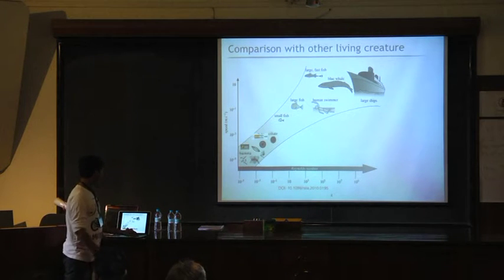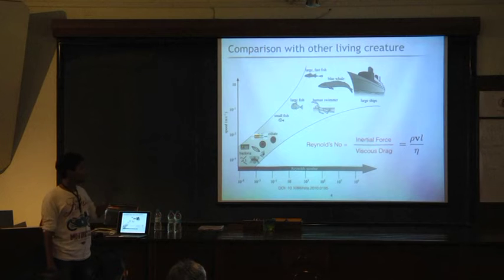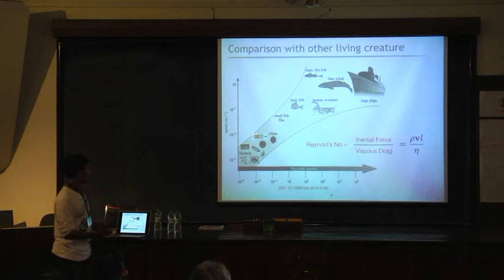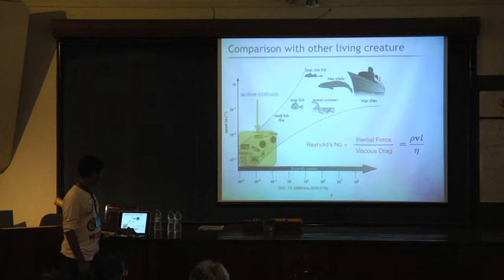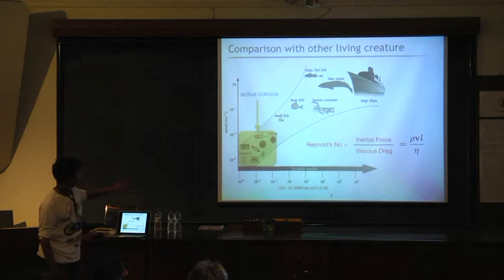The thing which is in the x-axis is Reynolds number, which determines how inertial force or inertia is important compared to viscosity in the solution. In the colloids, active colloids which we are interested in, is very low at Reynolds number.